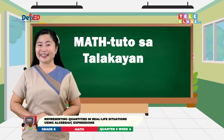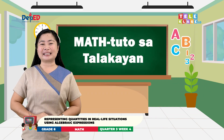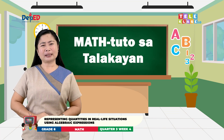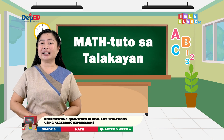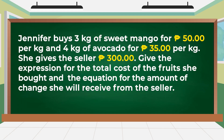Math Tuto sa Talakayan. We are now going to represent quantities in real-life situations. But how can we do that? I'll give you an example. Let us study and analyze this problem. Jennifer buys 3 kilograms of sweet mango for 50 pesos per kilogram and 4 kilograms of avocado for 35 pesos per kilogram. She gives the seller 300 pesos. Give the expression for the total cost of the fruits she bought and the equation for the amount of change she will receive from the seller.